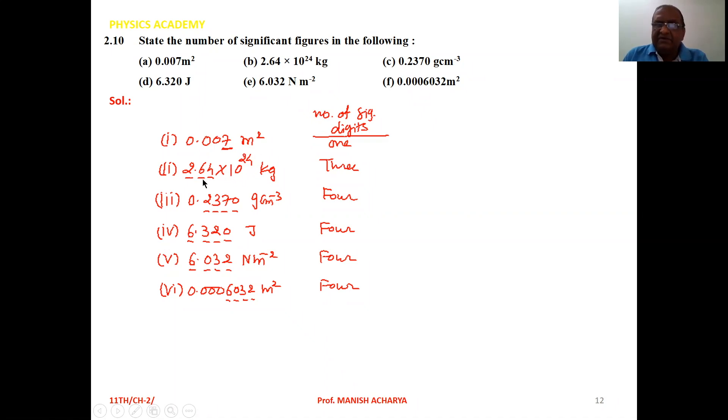Then 0.2370 g/cm³. Here trailing zero, that is significant one. When the decimal point is appearing, then 2, 3, 7, and 0, total 4 number of significant digits are there.